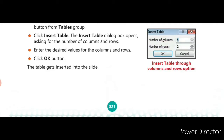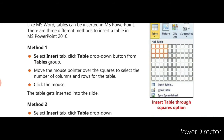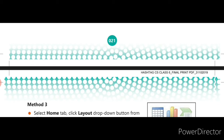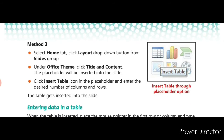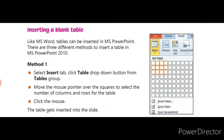So what are the three methods to insert a table? First method: inserting a table through the squares option. Second method: inserting tables through the Insert Table dialog box — the columns and rows option. Third method: inserting a table through the placeholder option. Using these three methods you can create a blank table.